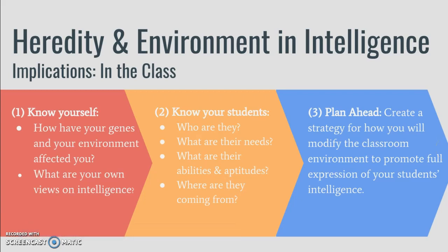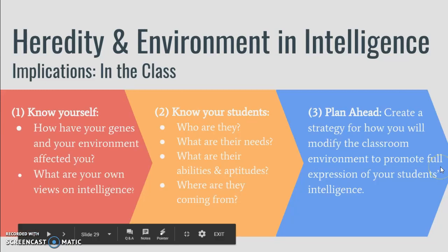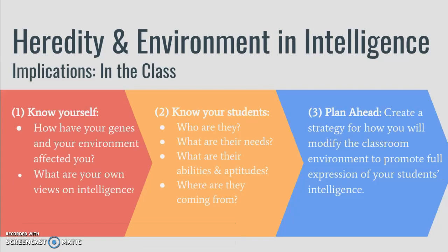Our case study has been pretty extreme in terms of heredity and environment in intelligence. However, we all have experiences attributed to one or the other — perhaps even both. Considering that we cannot change people's genetics or home environments, what can we do as teachers to facilitate student learning so they reach their full potential? First, you need to know yourself: how have your genes and environment affected you, and what are your own views on intelligence? Then know your students — who are they, what are their needs, abilities, aptitudes, and habits? Considering genetics, do they have siblings or even a twin? Though it's best to refrain from comparing students to their siblings, especially in front of them. Then plan ahead: create a strategy to modify the classroom environment to promote full intelligence, remembering it's not just about external environments like the social, physical, or economic — it's also the internal ones: their thoughts, unexpressed emotions, and the microbiome.